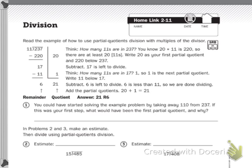6 is less than 11, so we are done dividing. Add the partial quotients up. 20 plus 1 is 21. So remainder is 6, quotient is 21.